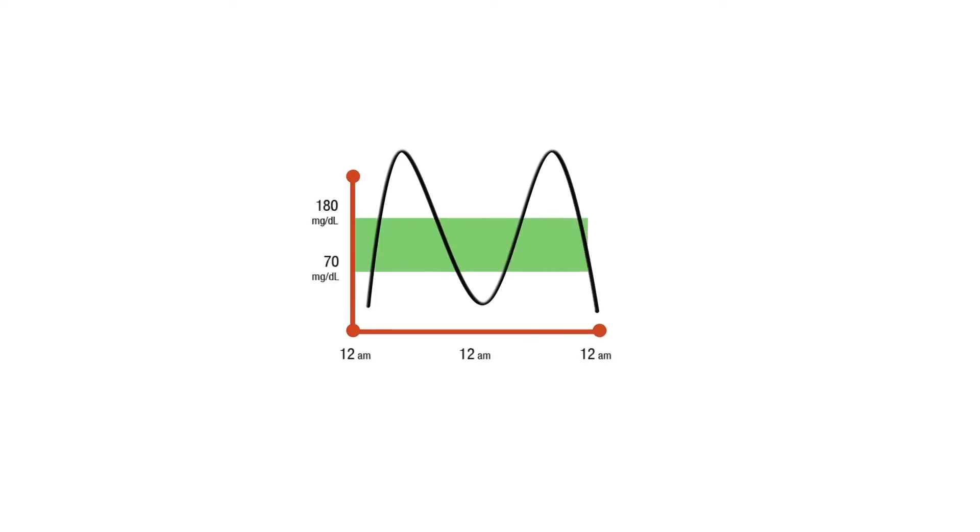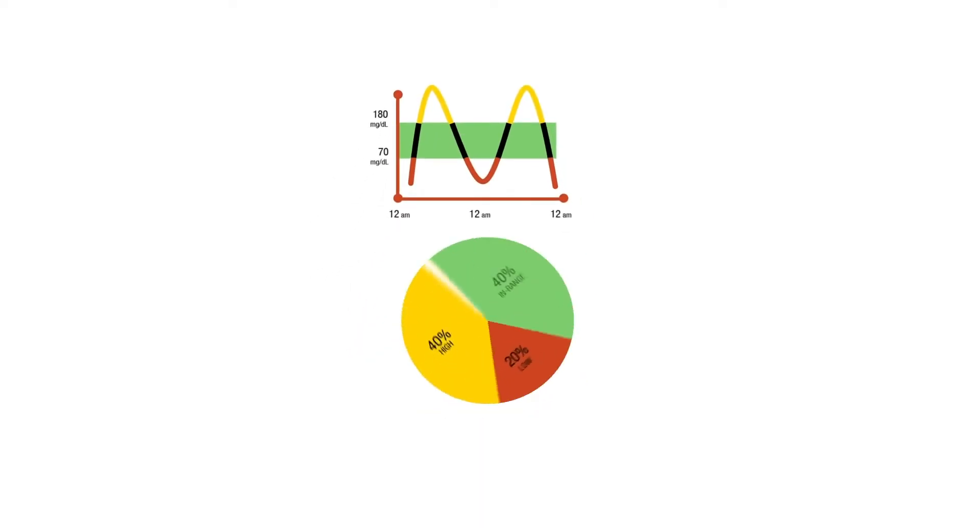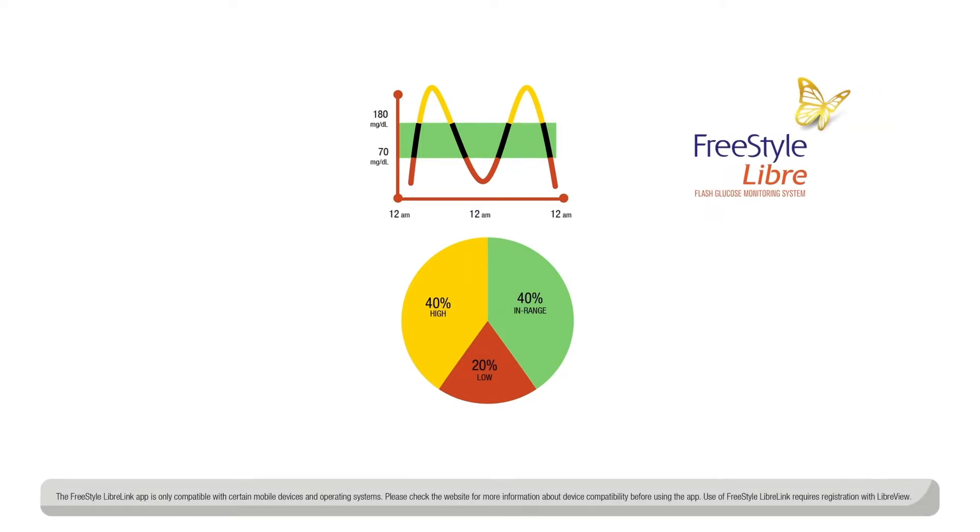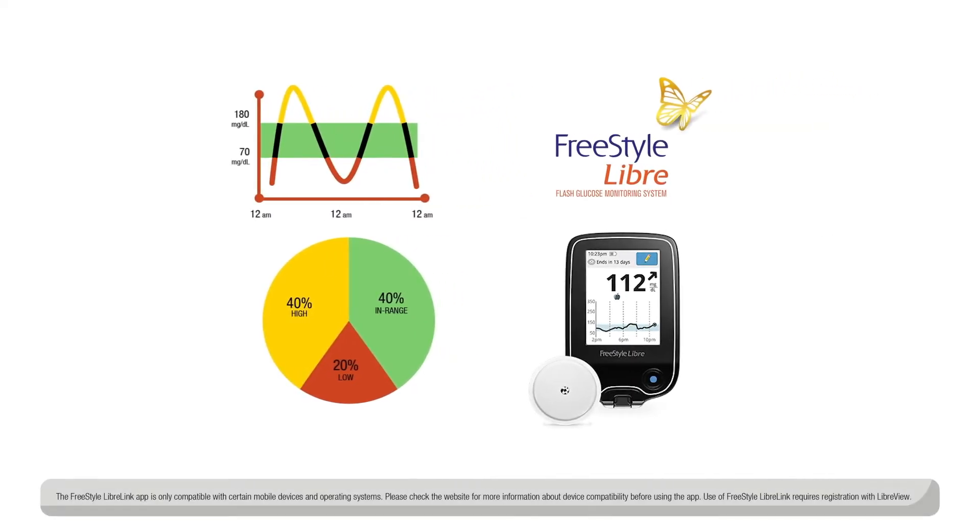Time in Range, or TIR, shows high, low, and in-range glucose information that can be measured with sensor-based glucose monitoring, like the Freestyle Libre System.